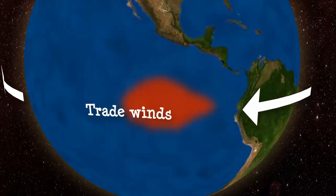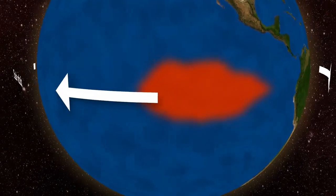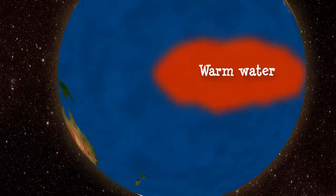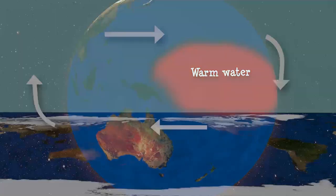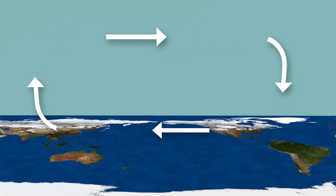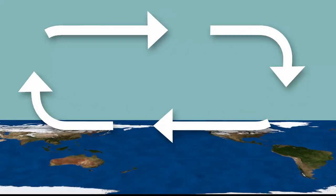As the Earth spins, trade winds stream across the planet, driving warm surface seawaters across the vast Pacific Ocean. These sea surface temperatures create predictable patterns of circulation in the atmosphere and ocean.